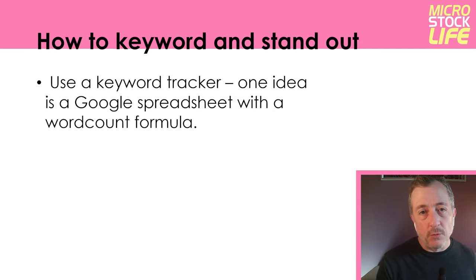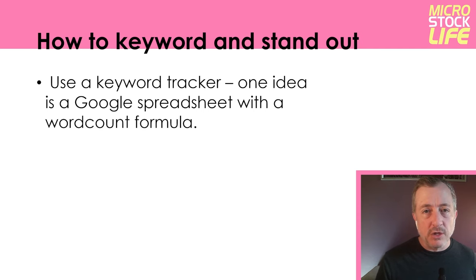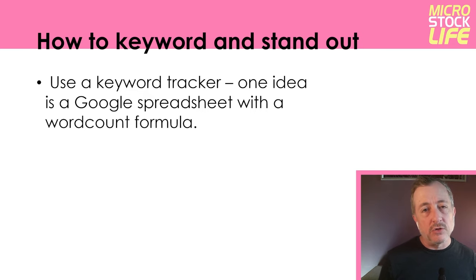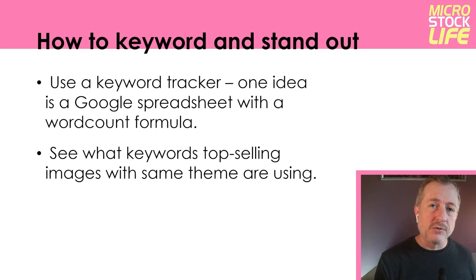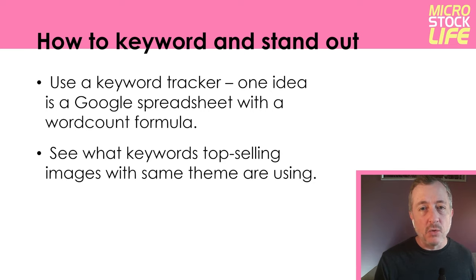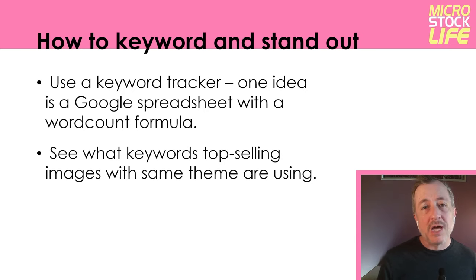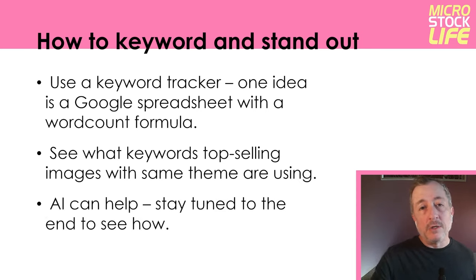As you're building your list of keywords for a particular photo or video, a great tool to use is a Google Spreadsheet or Excel sheet with a formula in a cell that tracks the number of words in your keyword cell. Another great thing to do is look at other images or videos similar to yours — see what are the top-selling ones currently in the marketplace and what keywords they use. Don't just copy and paste those keywords as your own; make sure what you're putting in is descriptive of your content. But you might find clues into what top-selling images are using for keywords, and where appropriate, add them to your list. Finally, AI is a great resource to help you with keywording — I'll show you that when we cover the AI section at the end of the course.